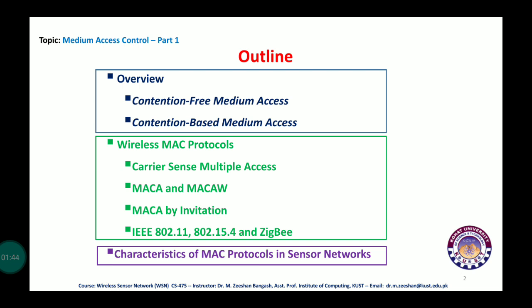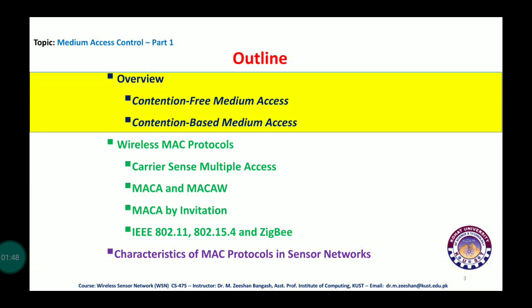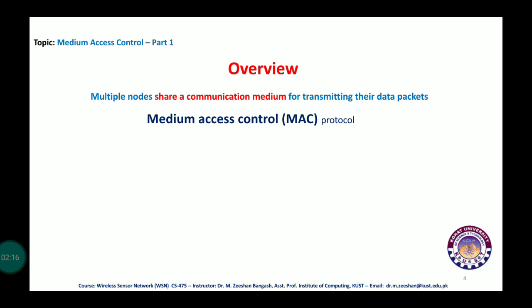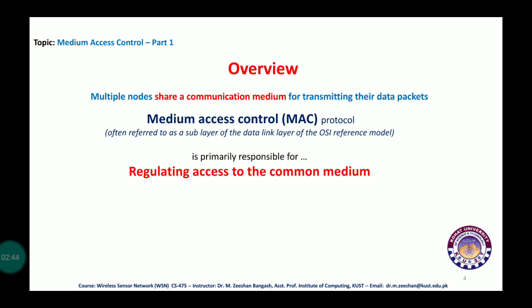Multiple nodes share a communication medium to transmit their data in a wireless environment. There is a need for a medium access control protocol, which we know from the OSI model as the data link layer — the second layer. This MAC protocol is a sub-layer protocol whose responsibility is to regulate and control access to the shared medium among different devices.